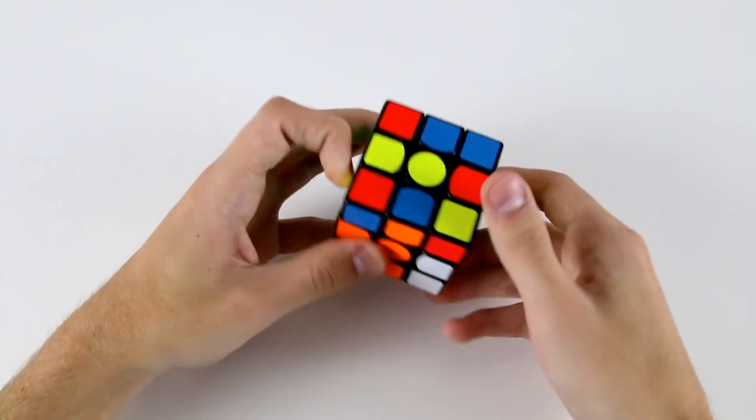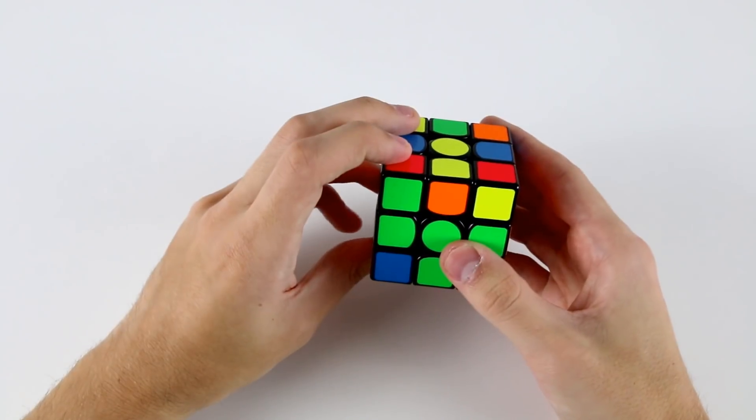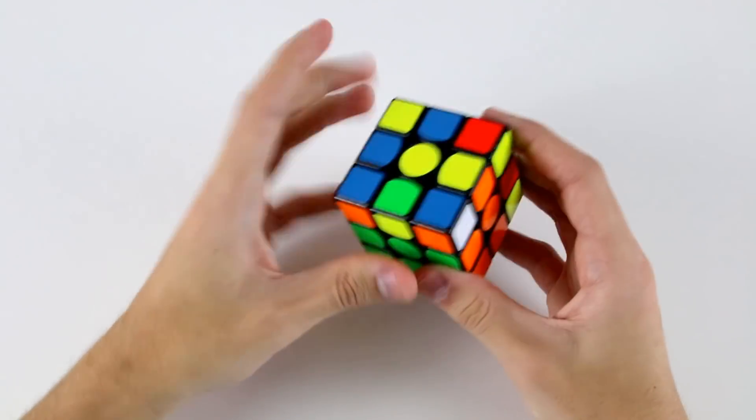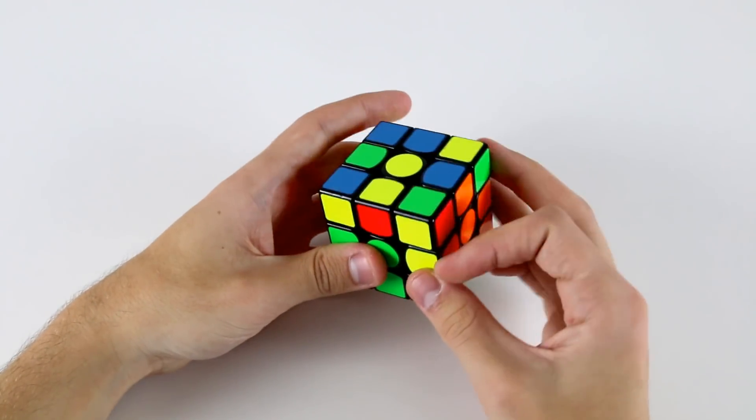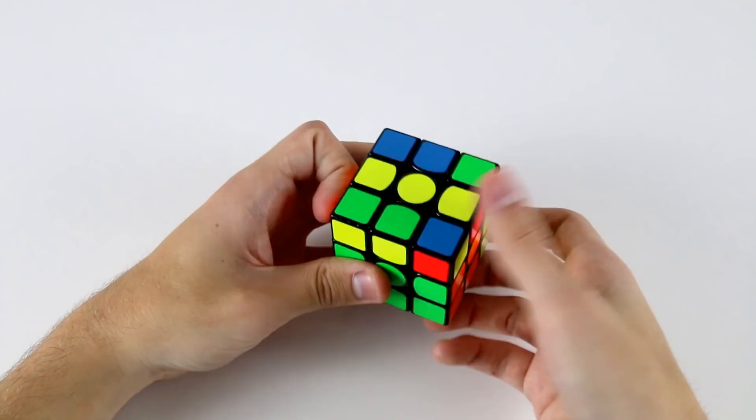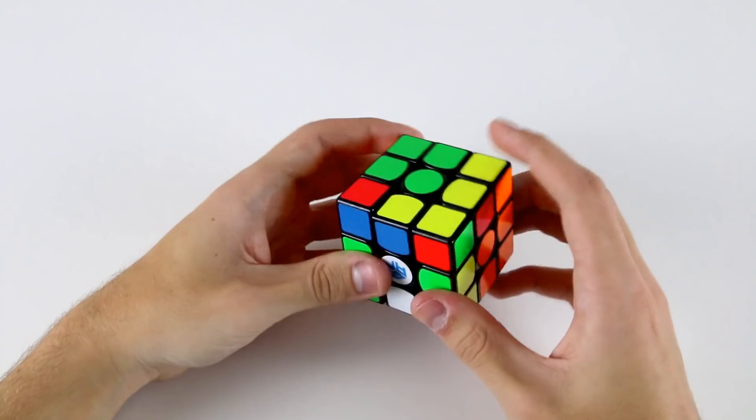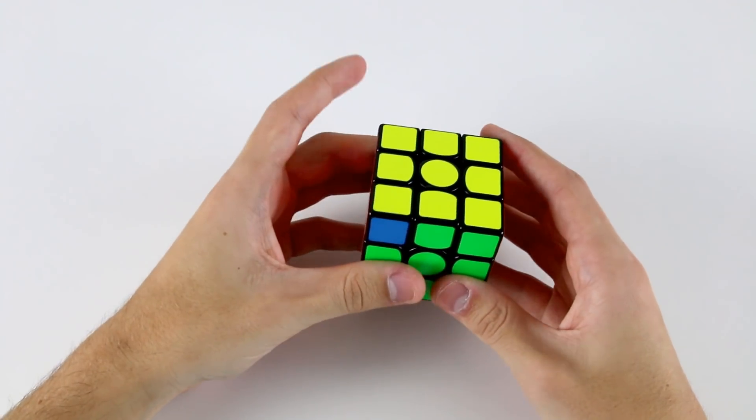Then we've got these two which we can insert into the back left slot here, and then these two which go into this slot here. So hide the corner and insert. Now I've got OLL and then PLL.